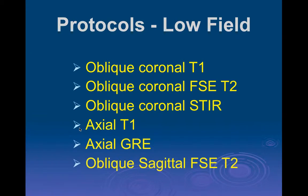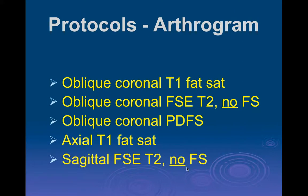At low field, I change the protocol a little bit. I do coronal T1, T2, and instead of PD fat sat — since you can't do PD fat sat well at low fields — I usually use a STIR. You could use a Dixon technique, depending on whichever fat suppression sequence works best on the particular scanner. Then axial T1, axial gradient echo, which we used to use at high fields before fat suppress sequences became available, and sagittal T2 without fat suppression.